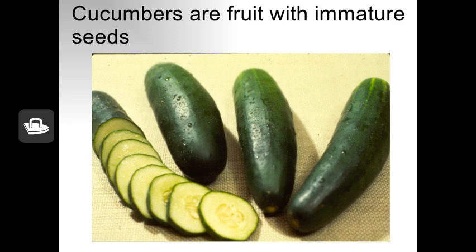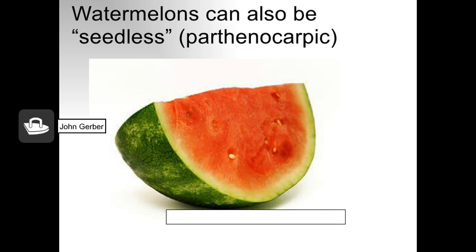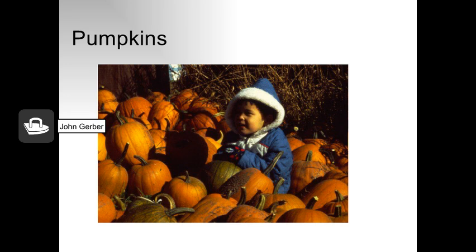Seedless watermelons actually do have seeds — these little ovules are underdeveloped seeds that don't mature; they're pre-seeds that can easily be eaten. Pumpkins are botanically a fruit, although they're often considered a vegetable for cooking purposes, and they have mature seeds in them when harvested.